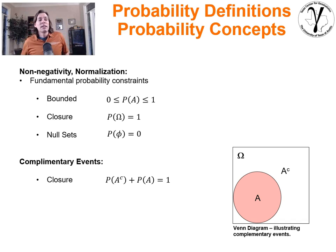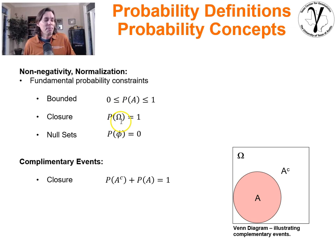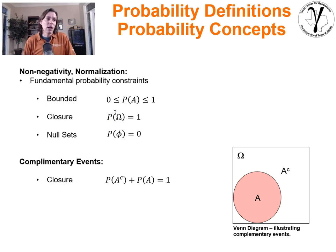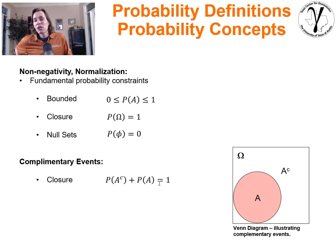Fundamental probability constraints exist. Probability is bounded — we should never have a probability that's negative or greater than one. Closure means the probability of all outcomes must equal one. Null sets are constraints for which something never happens, so we deem them zero probability. Complementary events have closure: the probability of A complement plus the probability of A must equal one. When we get into conditionals, we'll find other closure relationships that are quite powerful and helpful.